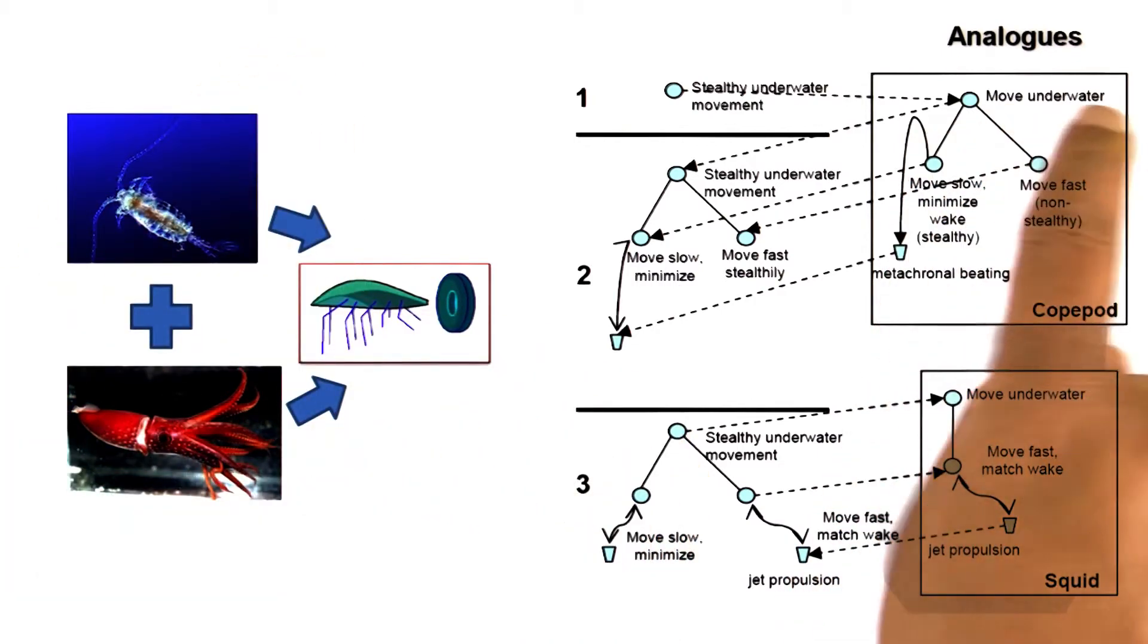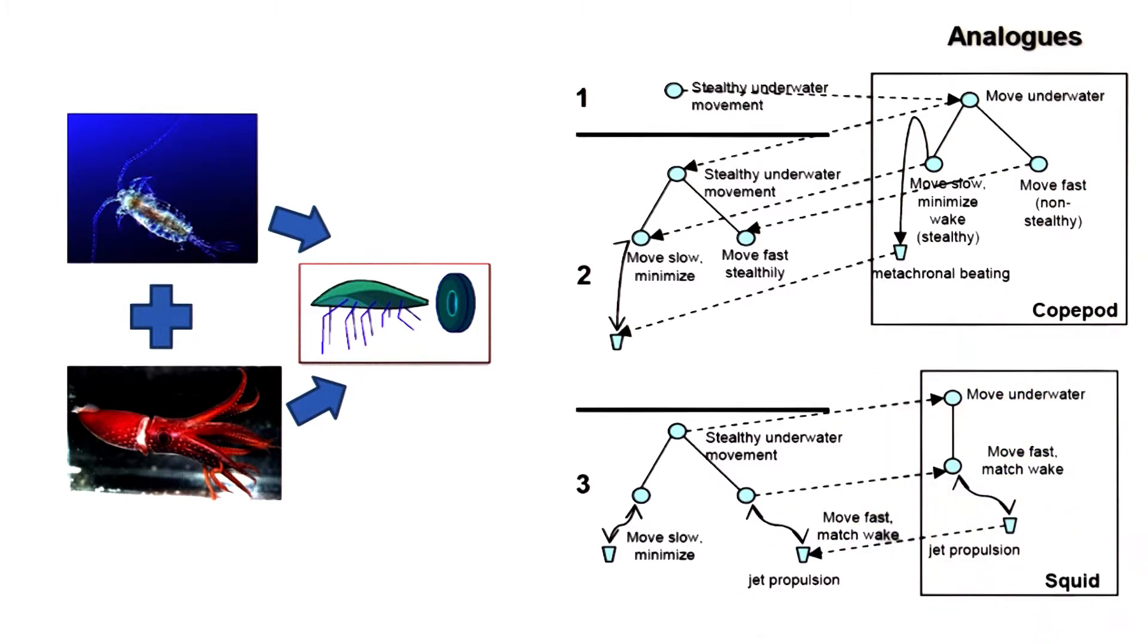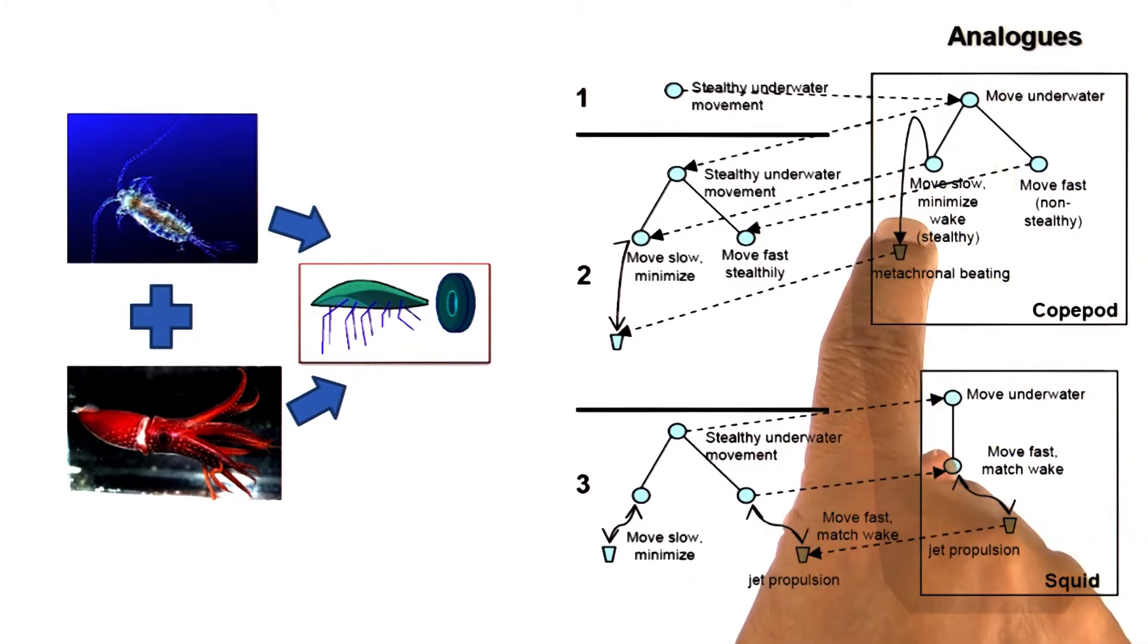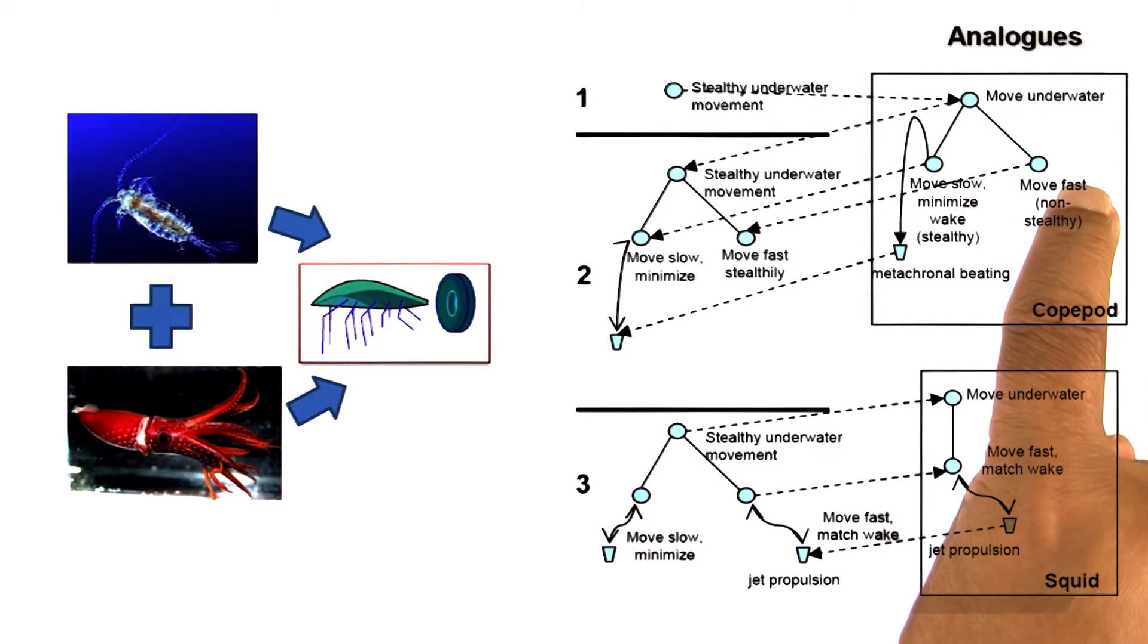We had the original design problem as moving underwater in a stealthy manner. Now that we have a design of an organism for moving underwater at low velocities, we are still left with the sub-goal of moving underwater at high velocities.